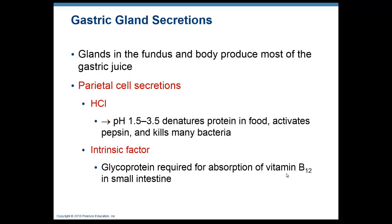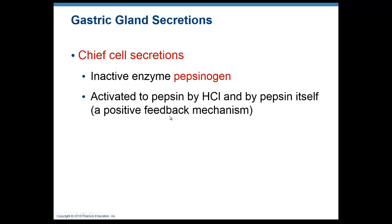People without intrinsic factor need injections of vitamin B12 throughout their life. Chief cells secrete an enzyme called pepsinogen, which in the presence of HCl is activated to become pepsin — needed for protein digestion in the stomach.